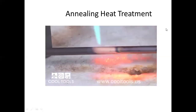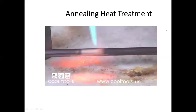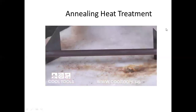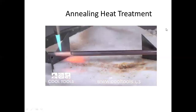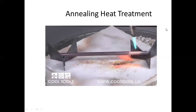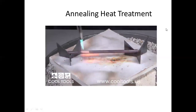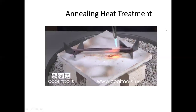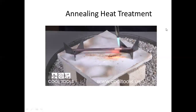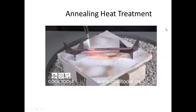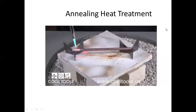Annealing is a heat treatment that alters the material to increase its ductility and make it more workable. During the process, you heat the material above its critical temperature and then cool it. Annealing can induce ductility, soften metal, relieve internal stresses, and improve cold working properties — a valuable technique because making jewelry requires small, precise bends. When your piece is ready, there will be a dull red glow consistent across the entire piece.